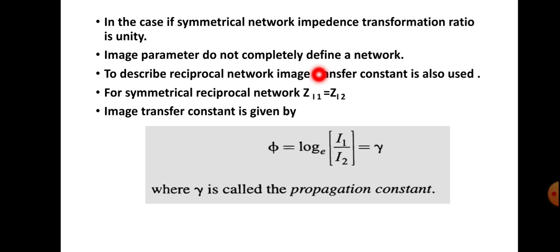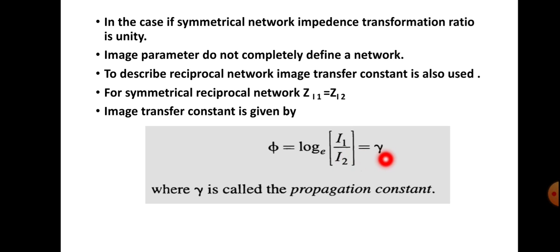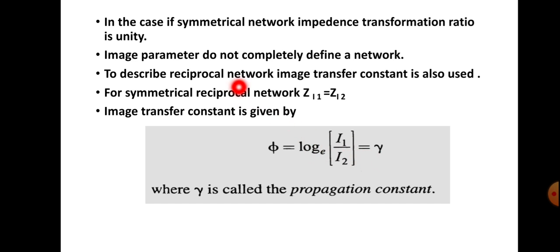In the case of a symmetrical network, ZI1 equals ZI2. But for a reciprocal network, we need another parameter called the image transfer constant phi. Phi equals log(I1/I2), which equals gamma, where gamma is called the propagation constant. The image transfer constant or propagation constant is necessary to fully describe a symmetrical reciprocal network along with the image impedance parameter. Thank you.